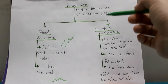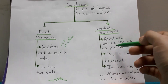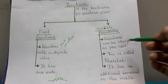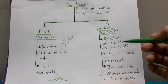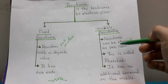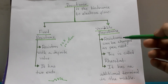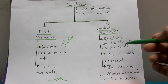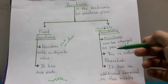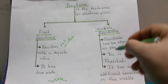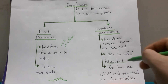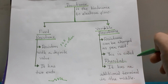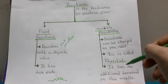Variable resistance is resistance that can be changed as per need. When we need more resistance for safety, we can add resistance. Or if we want more supply of electricity, we can remove extra resistance. Variable resistance is also called rheostat. This is very important for the exam — a question may come: what is rheostat?